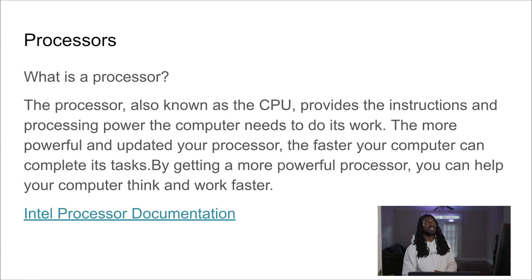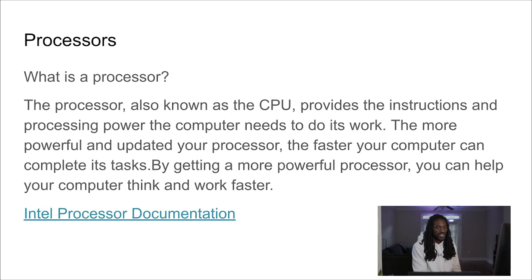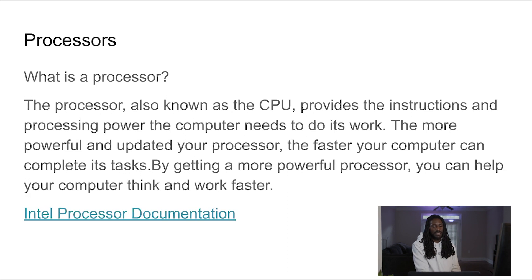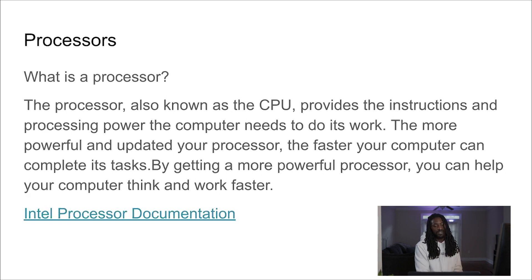If you remember in 2021 and 2022 during the pandemic, the price of chips was going up because there was a huge shortage. Processors are a huge business — America has a monopoly over it right now, and we're competing with China, which is starting to develop their own chip manufacturers. I have some Intel processor documentation here. If you want to learn more about processors, Intel has a lot of great documentation. This is the actual chip, and you can see the transistors and pins on the back that link up all the cores.